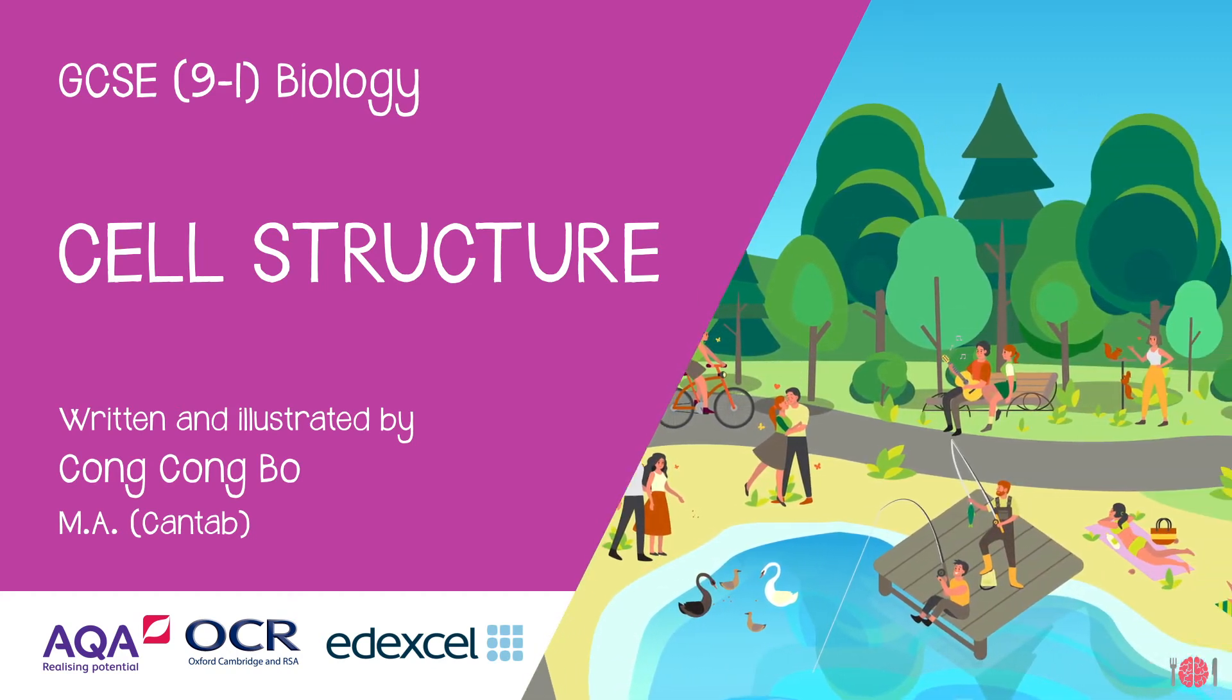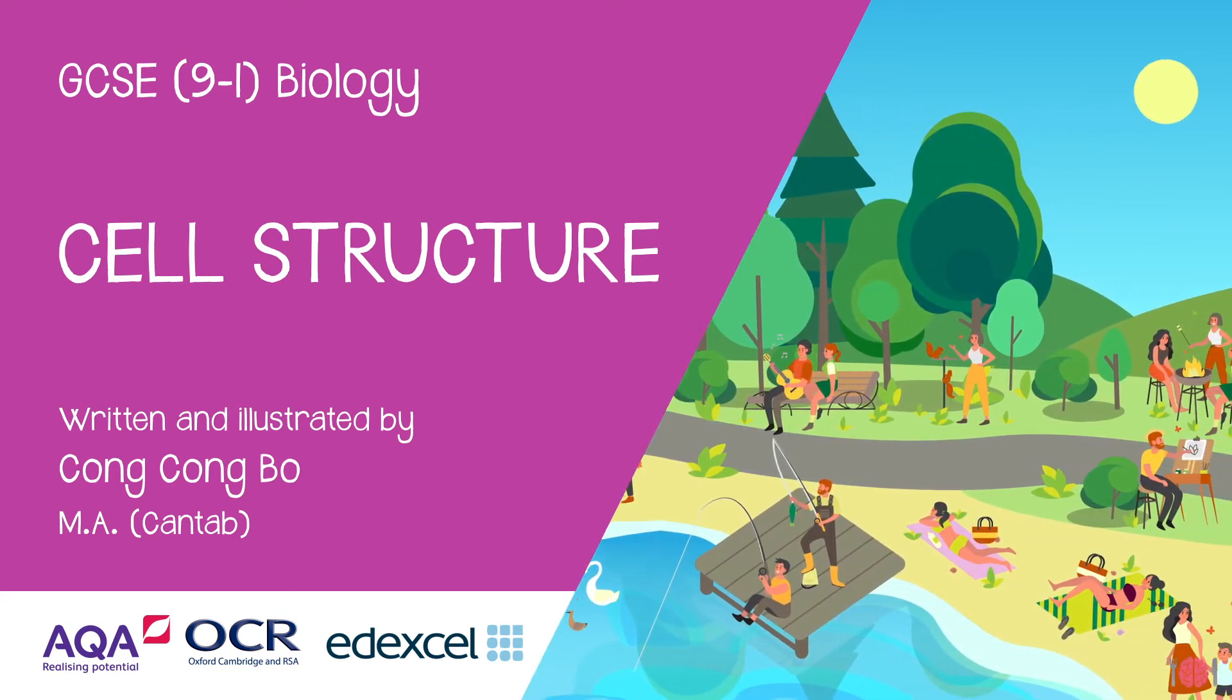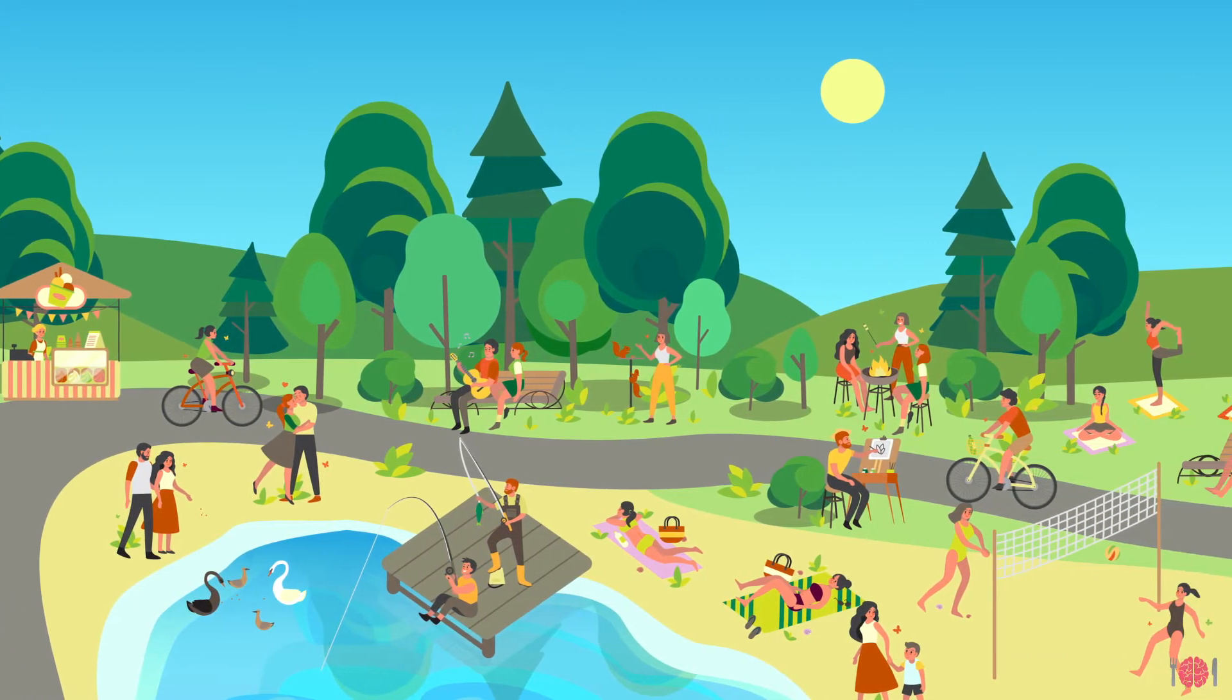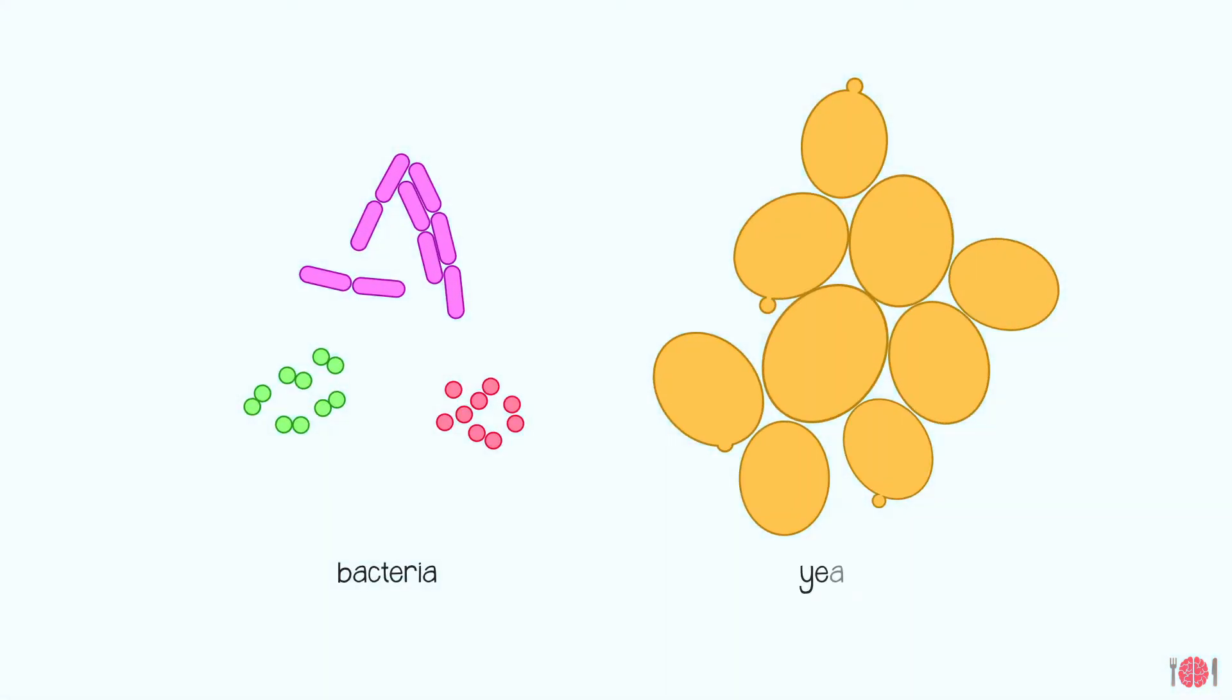Living creatures are made up of tiny functional units called cells. While we humans and our mammalian friends are made of millions of cells, we are surrounded by single-celled organisms such as bacteria and yeasts.